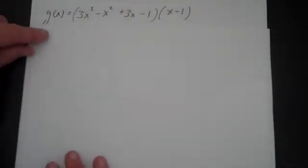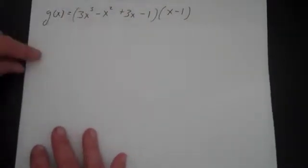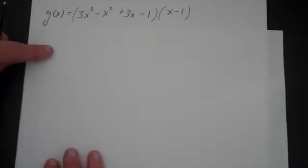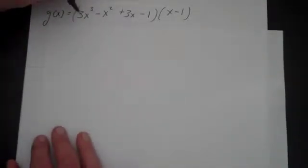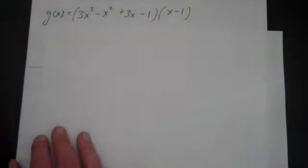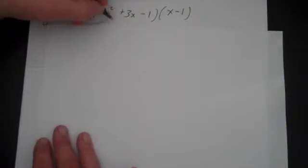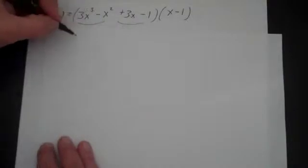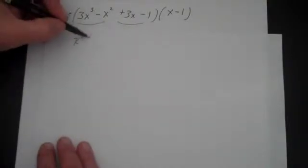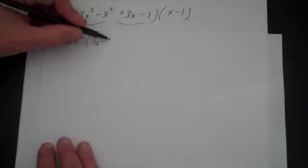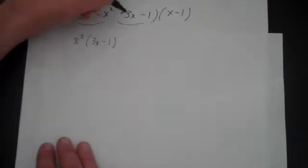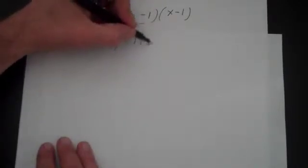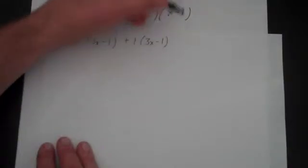What I'm going to do now is factor this term right here, and I'm going to use factor by grouping if I can. Whenever you have a polynomial with 4 terms, you can try factoring by grouping — sometimes it works, sometimes it doesn't. Here I'm going to take out an x squared. If I take an x squared out, then I end up with 3x minus 1. And here I'm going to take a 1 out, and I end up with 3x minus 1. You can't forget your x minus 1.